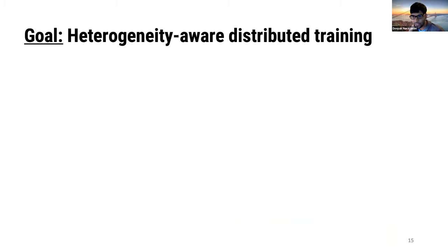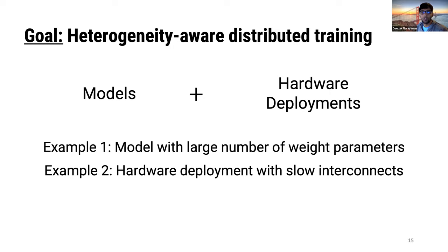To achieve high performance across different settings, we need heterogeneity-aware distributed training. Each parallelism approach has its own trade-offs, so a single strategy won't dominate across all models and hardware configurations. For example, the optimal strategy for a model with many weight parameters may differ from one with fewer parameters, and hardware with fast interconnects between devices may favor a different parallelization strategy than hardware with slow interconnects.